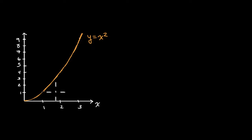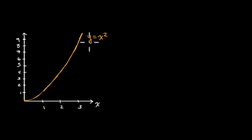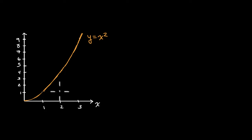Right over here we have the graph of y is equal to x squared, or at least part of the graph of y is equal to x squared. The first thing I'd like to tackle is think about the average rate of change of y with respect to x over the interval from x equaling one to x equaling three.